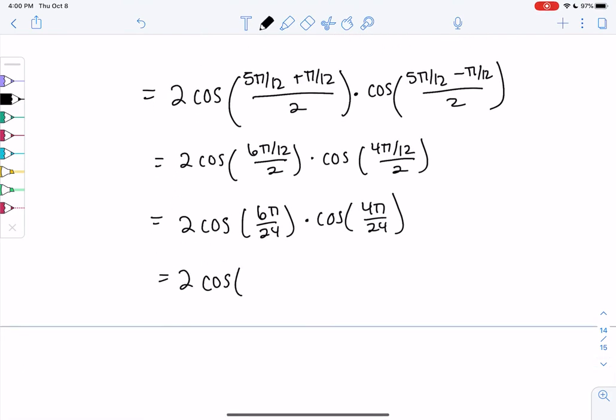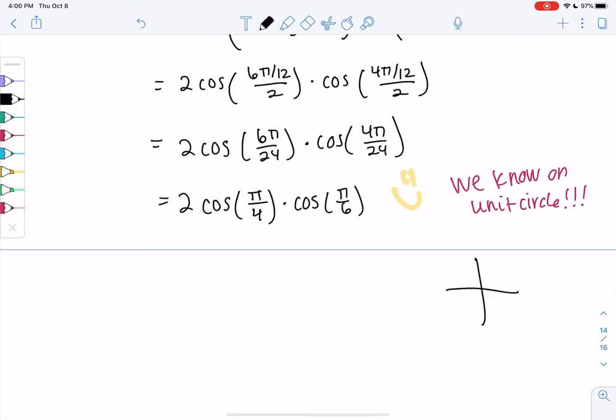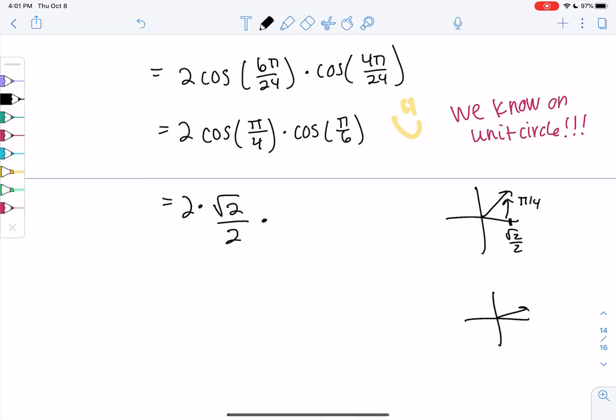So we get 2 cosine. 6 and 24 becomes π over, what do they have in common, 6? π/4, and then cosine of π/6. And we know both of these on the unit circle. So I know the formulas are super ugly and annoying, but the whole goal is to get angles that we know. So we'll go to π/4, that'll be right there. That's that medium side, so √2/2. So 2 times √2/2. And then π/6 is down here. That's the long side for cosine. Remember, we're doing cosine. So the long side was √3/2.